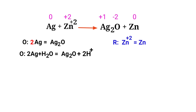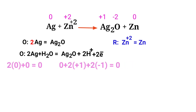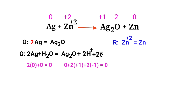For a redox reaction, the addition of charges should be equal on both sides. Check the oxidation half reaction — both sides are not equal. To make them equal, add electrons (not protons). Adding two protons to the left side to reach plus two would be wrong. Instead, add two electrons to the right side to make it equal to zero. The charges are now equaled in the oxidation half reaction.